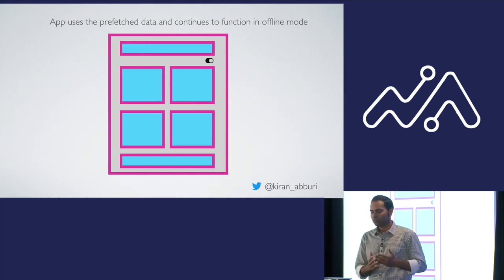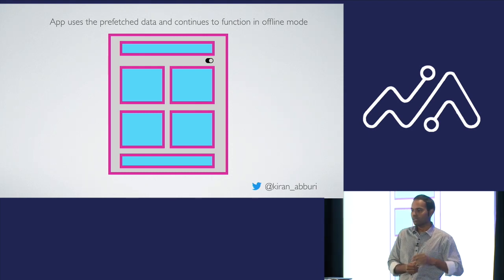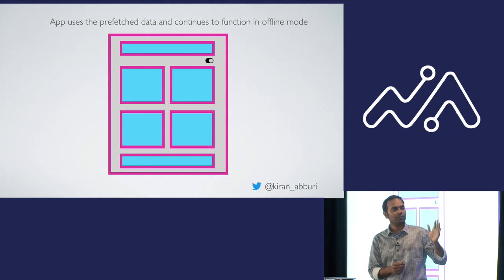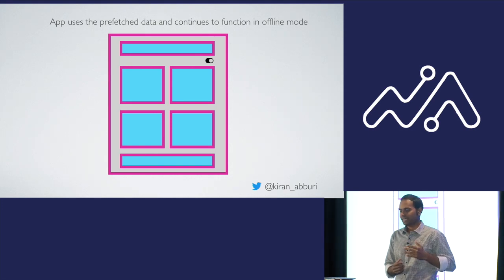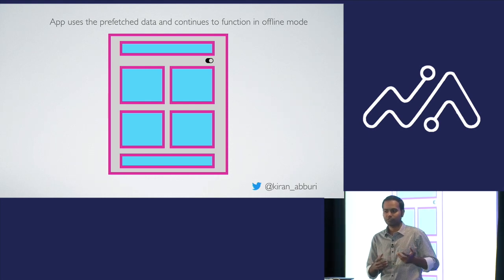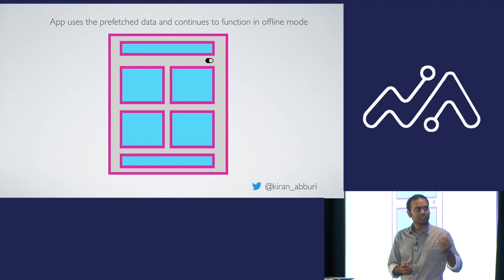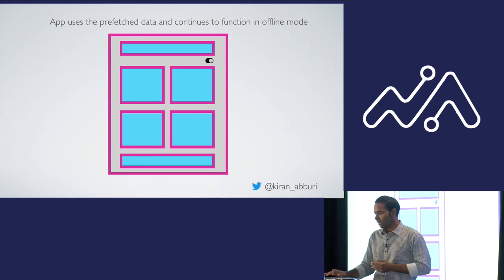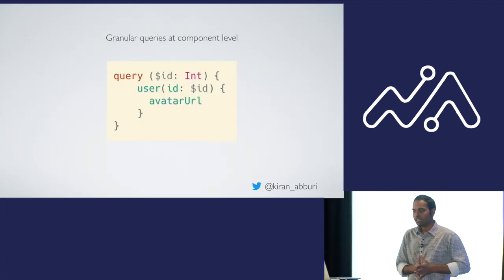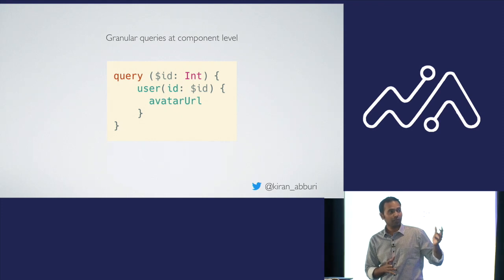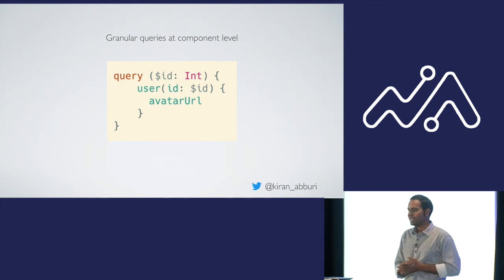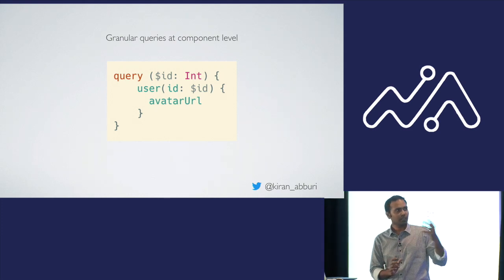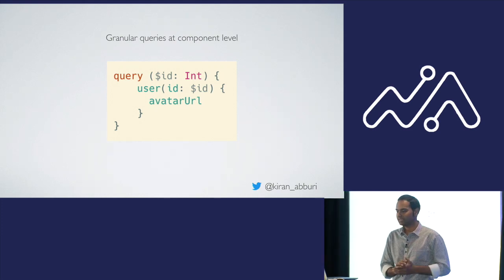With this architecture, even if the user goes offline and interacts with the app, it continues to work because we prefetched the data. We now have two levels of GraphQL queries: one at the top level to prefetch all data, and one at the component level to get data required for individual components and pass it to them. We generally use granular queries at the component level. For example, an avatar component query would only ask for the avatar URL field within a user object.